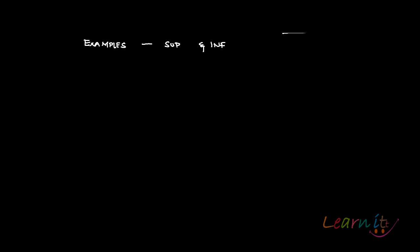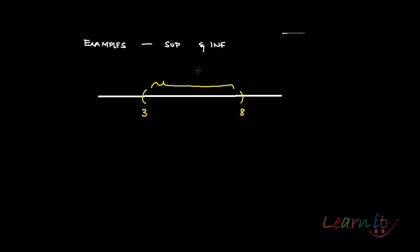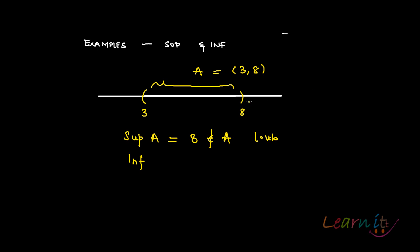Let's look at certain examples of supremum and infimum on the real line. Take the open interval (3, 8) as set A. The supremum of A will be 8 — the number eight, which does not belong to the set because it is an open interval. But it is the least upper bound; any upper bound would be greater than eight.